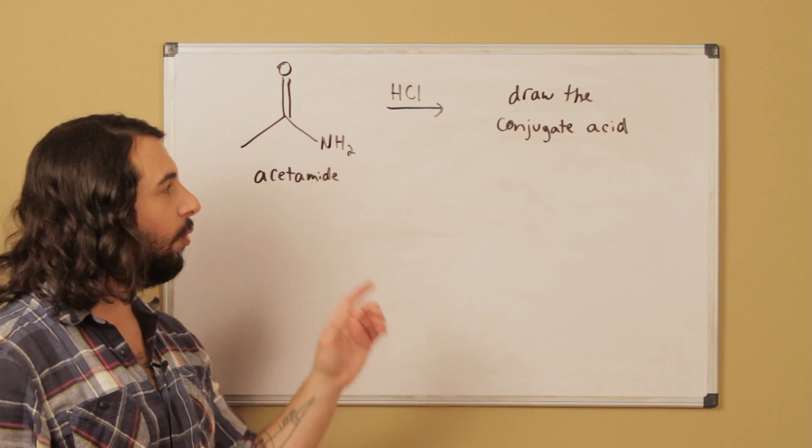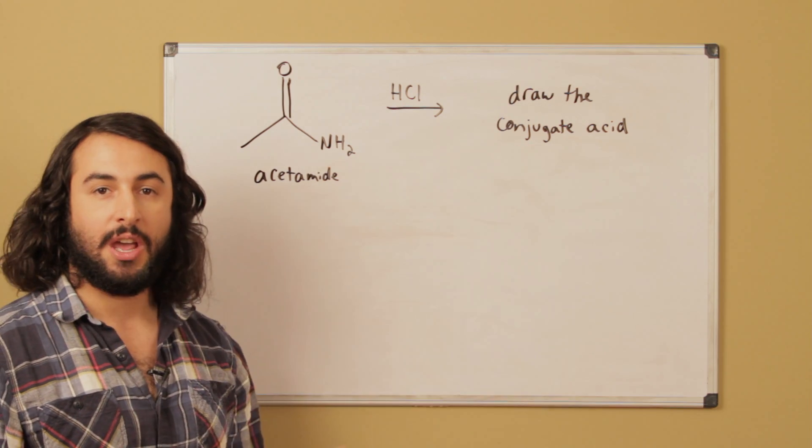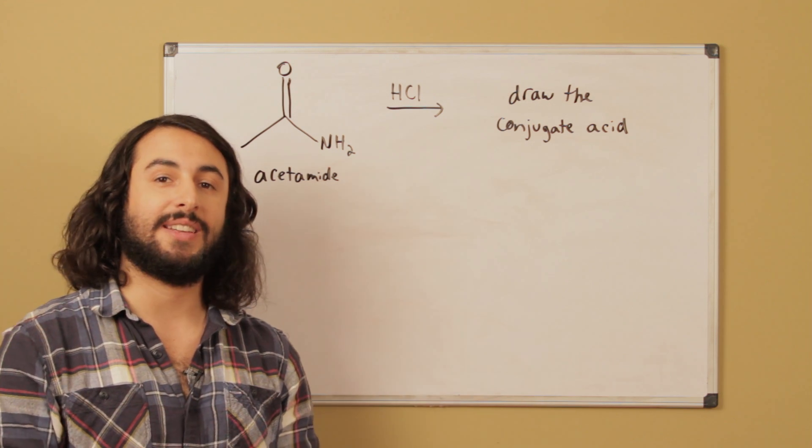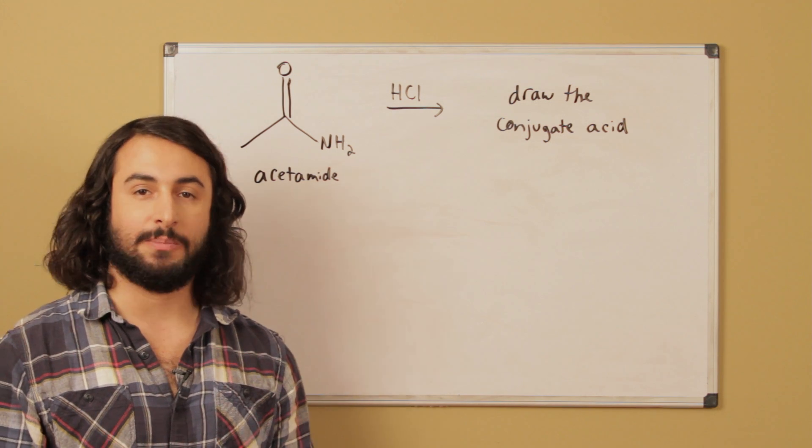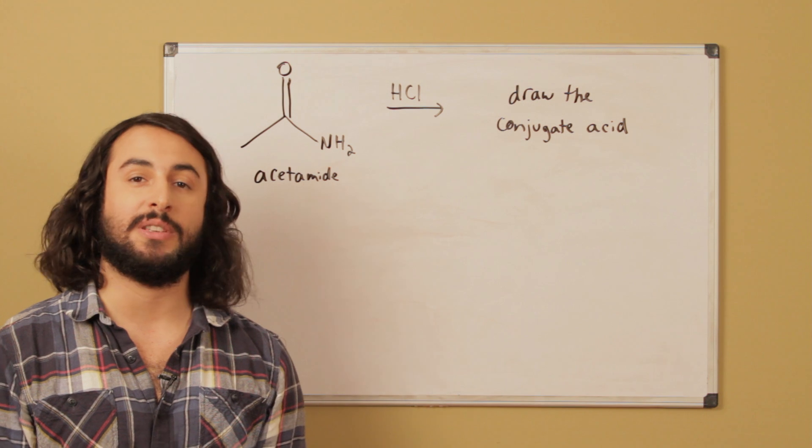We want to draw the conjugate acid of this weak base. If this seems confusing, you're going to want to go back to my general chemistry series and take a look at acids and bases, specifically Bronsted-Lowry acids and bases, and see how those work, and see if you can draw the correct product of this acid-base reaction.